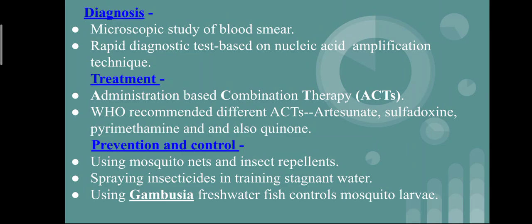For prevention and control of malaria: prevention of mosquito bites is achieved by using mosquito nets and insect repellents. It is also prevented by spraying insecticides and draining stagnant water. One more biocontrol method is that mosquito larvae can be controlled by using Gambusia fish, which is a freshwater fish.